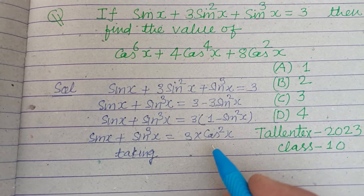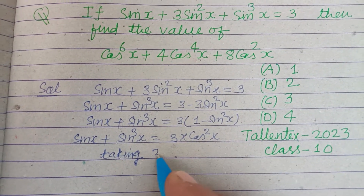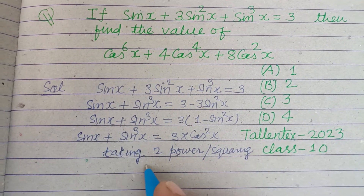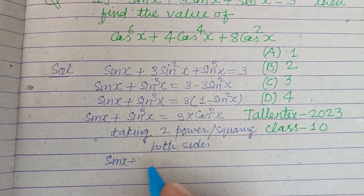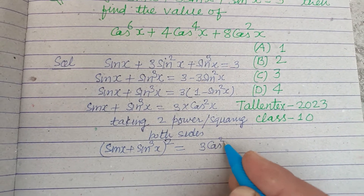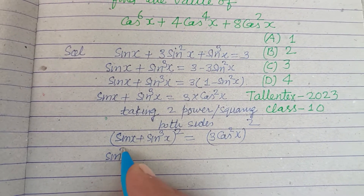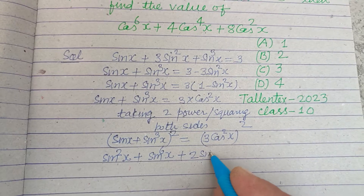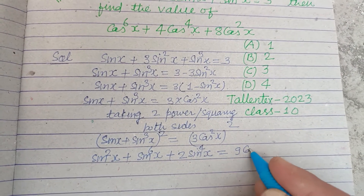Now squaring both sides, we have (sin x + sin³x)² = (3cos²x)². Expanding using (a + b)² gives sin²x + sin⁶x + 2·sin x·sin³x, which is sin⁴x, equal to 9cos⁴x.